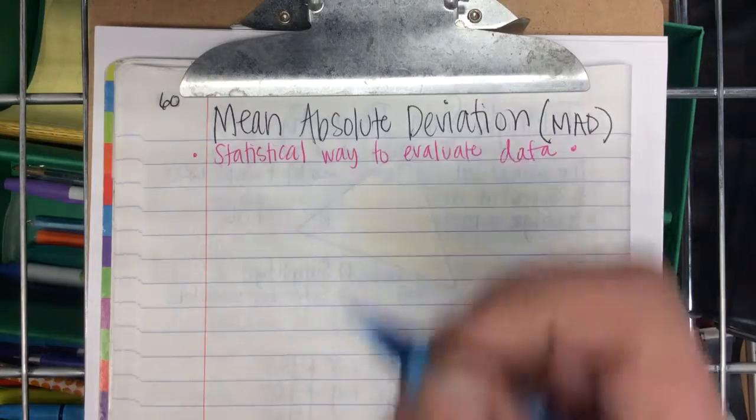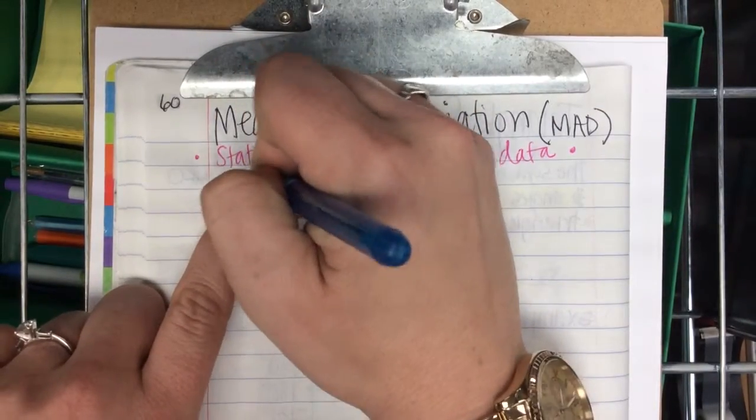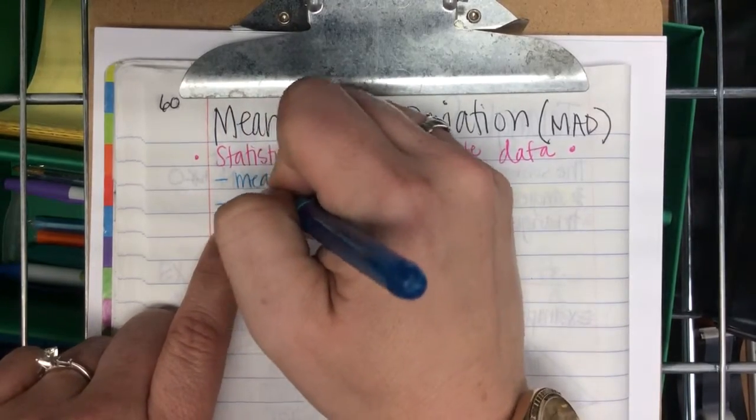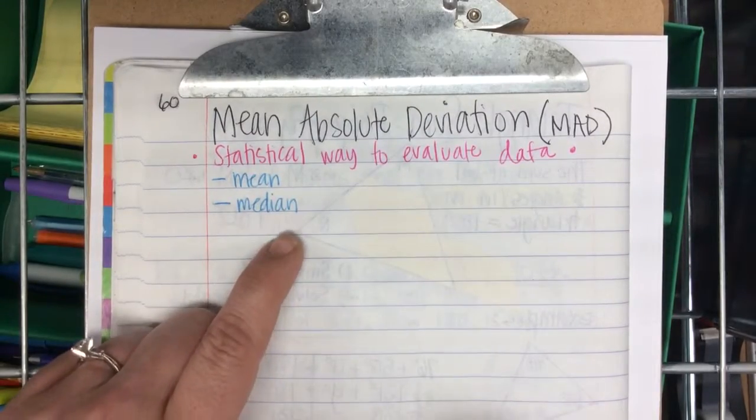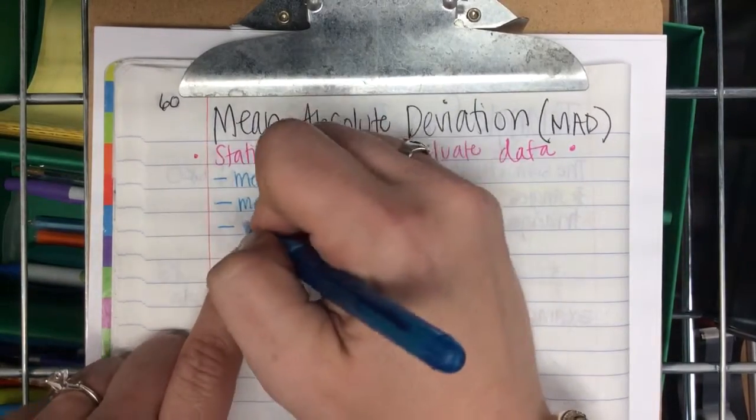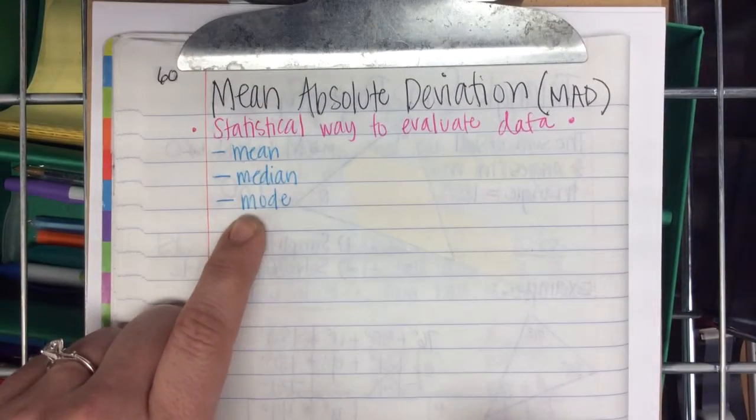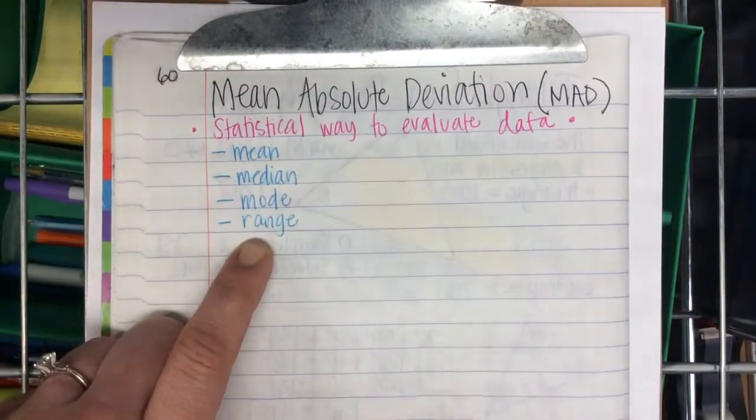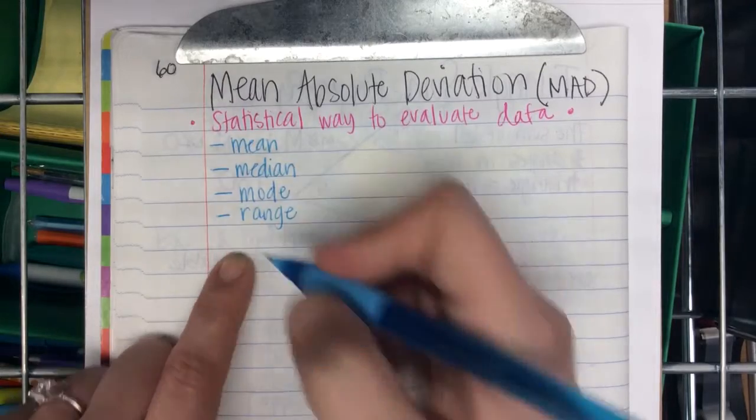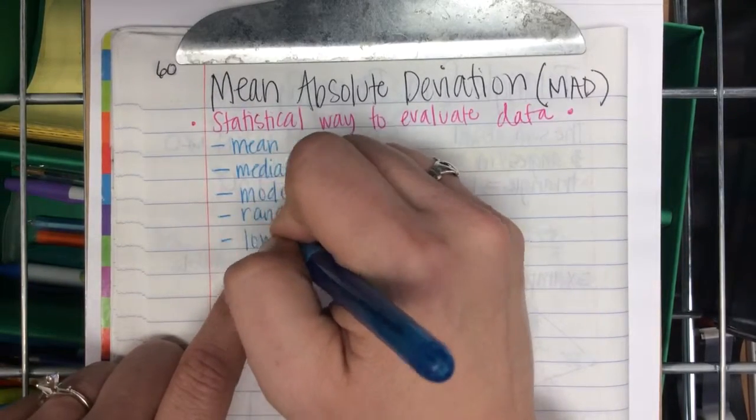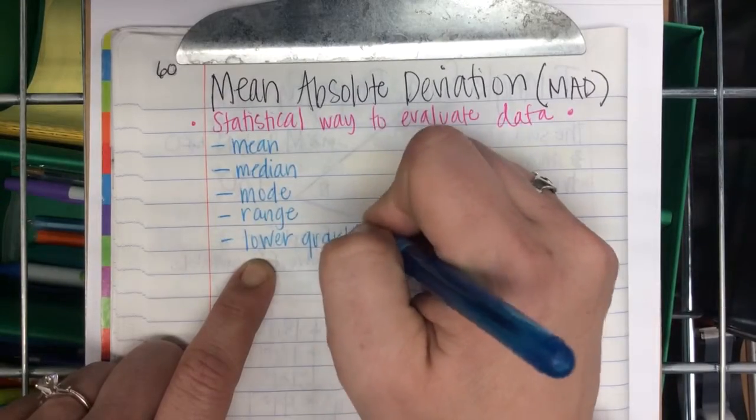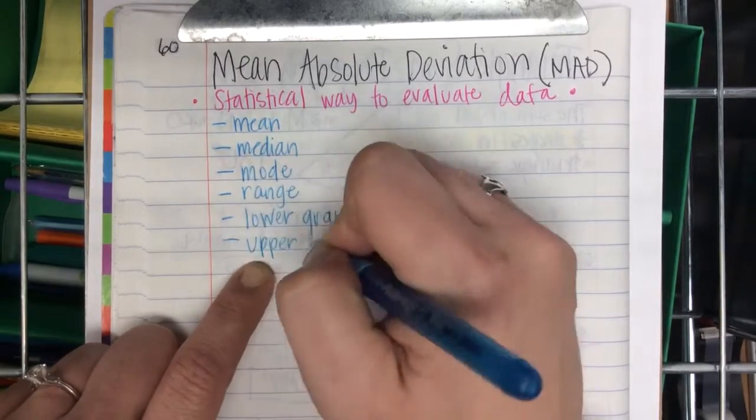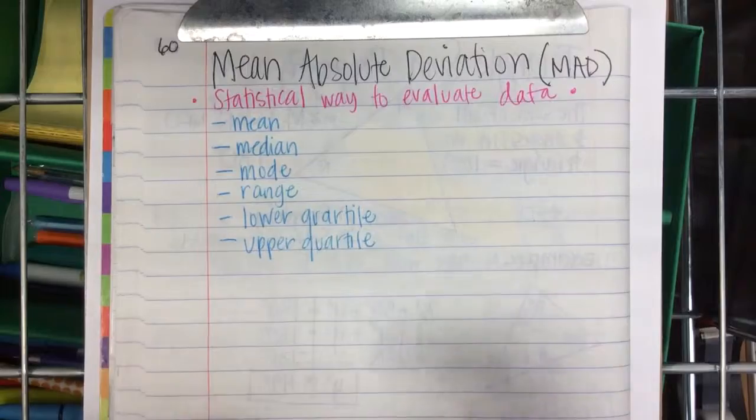You already know how to find the mean of data. You already know how to find the median of data. You already know how to find the mode of data. You can already find the range of data. You can also find the lower quartile and you can also find the upper quartile.